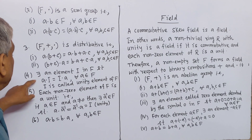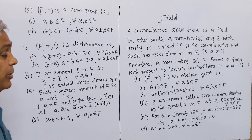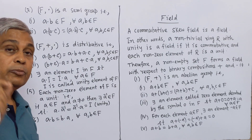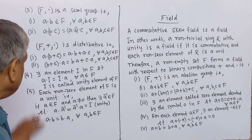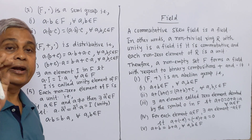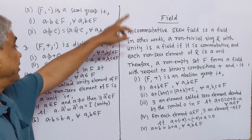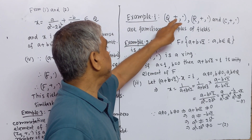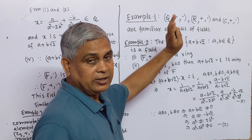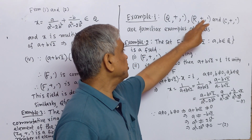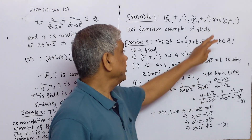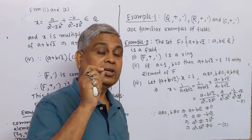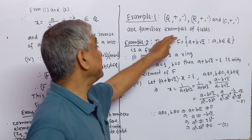Property 4 is existence of unity element. Property 5 is that each non-zero element is a unit, i.e., each non-zero element possesses a multiplicative inverse. Property 6 is commutative property with respect to multiplication. If these three extra properties are included with a non-trivial ring, then that ring will be a field. Examples: the set of rational numbers Q, the set of real numbers R — both with addition and multiplication — are fields.